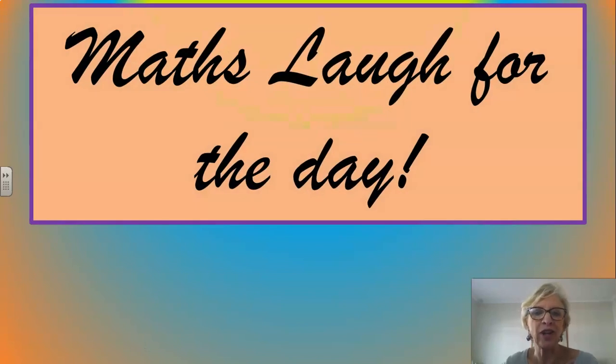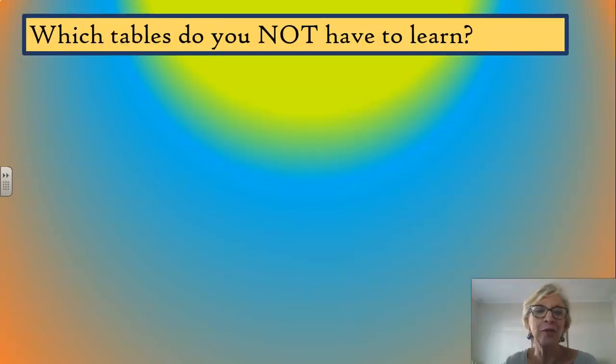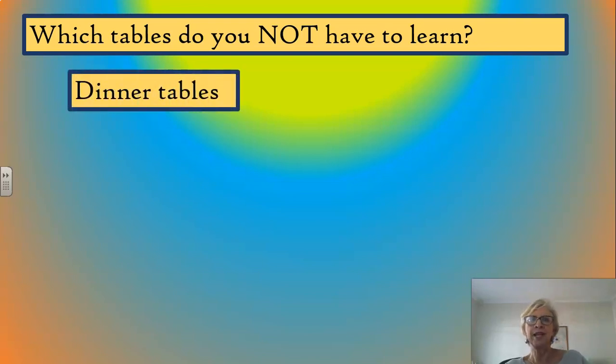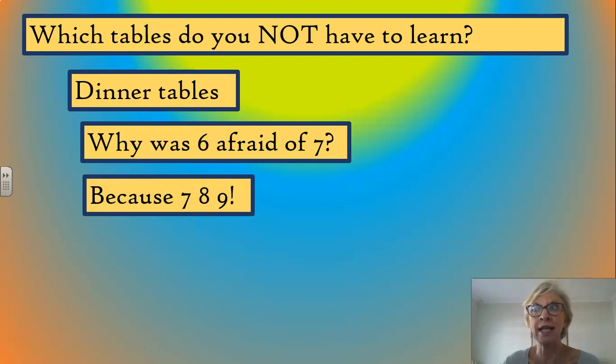Because you know what? We need to have a good old laugh, don't we? Exactly. Right, so, which tables do you not have to learn? Dinner tables. And the next one, why was six afraid of seven? Because seven, eight, nine. That's quite scary. I'd be afraid too.